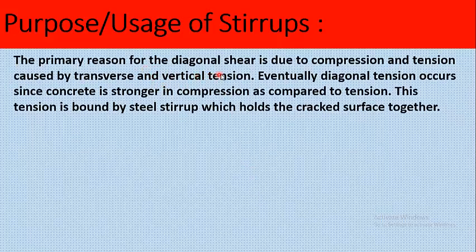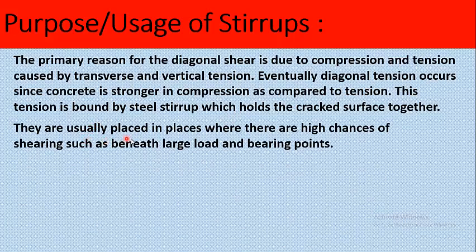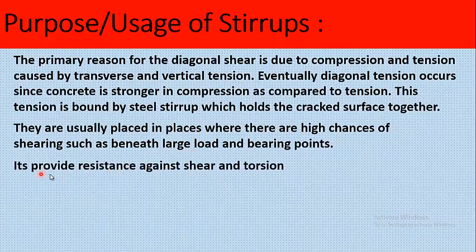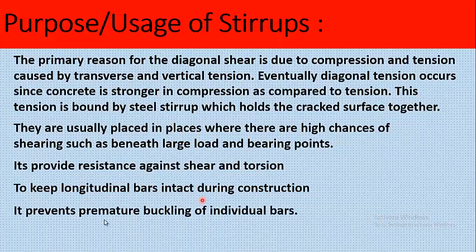The primary reason for diagonal shear is due to compression and tension caused by transverse and vertical forces, eventually resulting in diagonal tension. Since concrete is stronger in compression than in tension, this tension is resisted by the steel stirrup, which holds the crack surfaces together. Stirrups are usually placed where there are high chances of shearing, such as beneath large loads and bearing points. They provide resistance against shear and torsion, keep longitudinal bars intact during construction, and prevent premature buckling of individual bars.